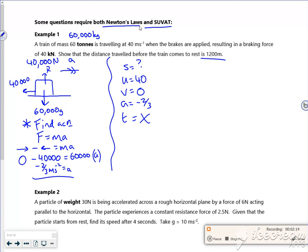So what's the equation without t in it? That's v squared equals u squared plus 2as. So 0 squared is 40 squared plus 2 times minus 2/3 of s. So I've got 0 is 1,600 minus 4/3 of s, so 4/3 of s is 1,600.